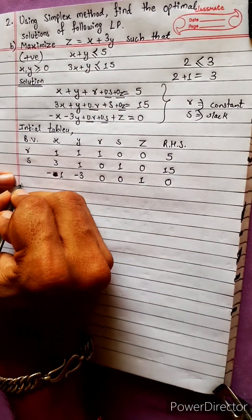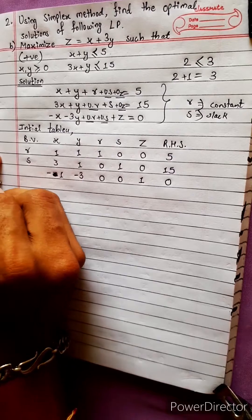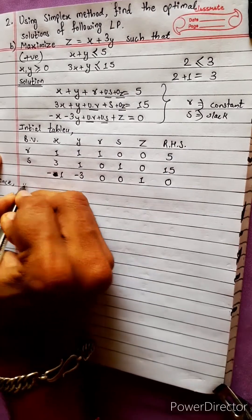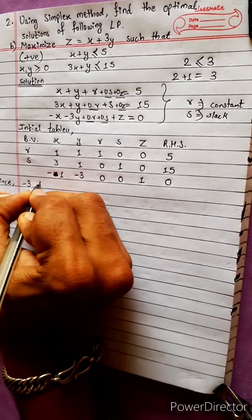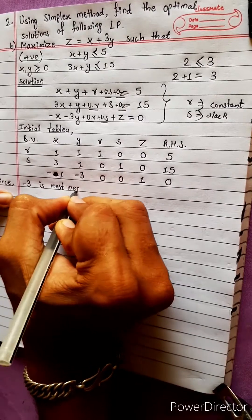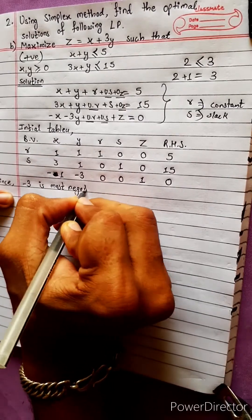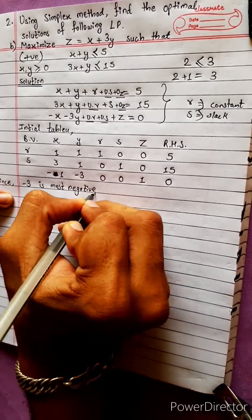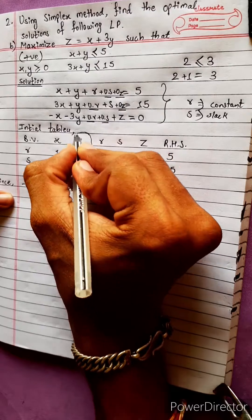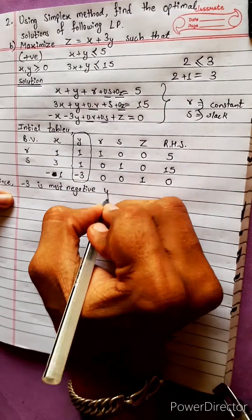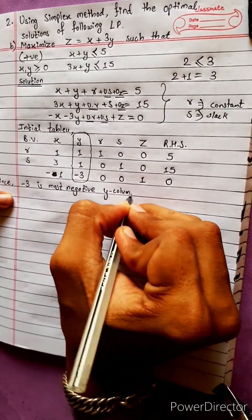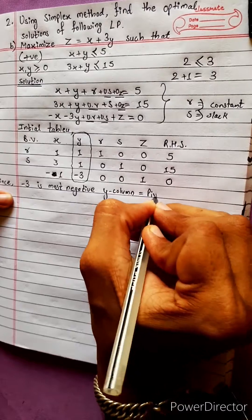The third row is: minus 1, minus 1, minus 3, 0, 0, 1, equal to 0. The first row has a negative entry. Since minus 3 is the most negative in the row, minus 3 becomes the pivot column — the y column equals the pivot column.